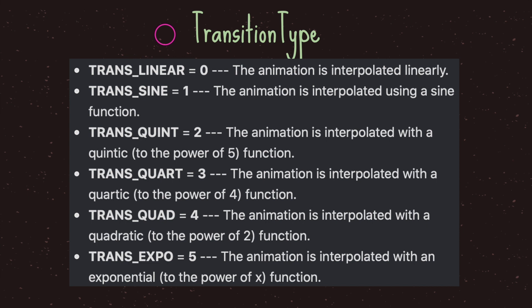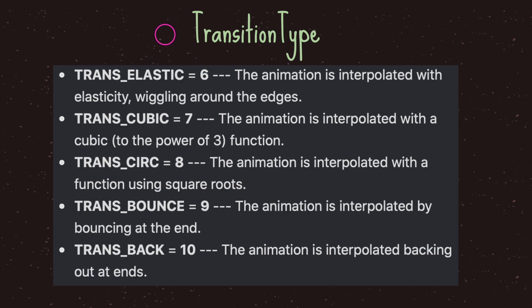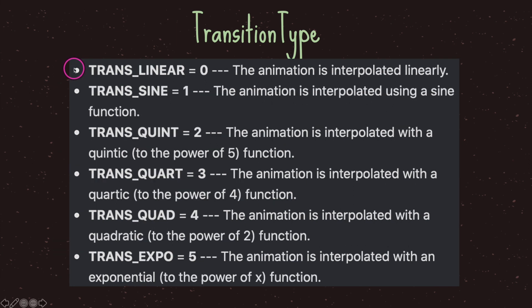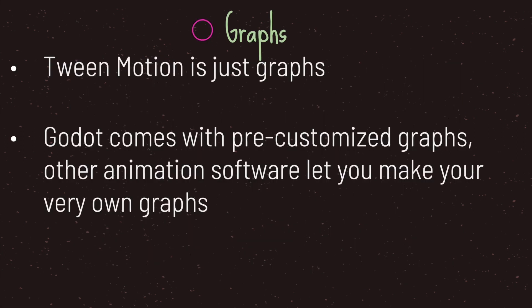Transition types define what kind of graph is used for the motion. Godot provides eleven choices at the time of this video, with linear being the most commonly used. Think of tween motion as position over time — Godot comes with pre-customized graphs making it easy to implement customized tween animations without building them from scratch.